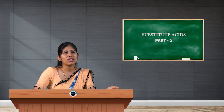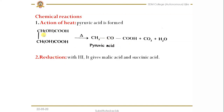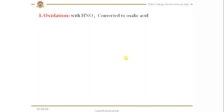Now we will see the chemical reactions of tartaric acid. First, action of heat — when tartaric acid is heated at higher temperature, we get pyruvic acid. Second, reduction — when tartaric acid is reduced with hydrogen iodide, removal of one hydroxy group takes place and we get malic acid. Further reduction removes the second hydroxy group and we get succinic acid. This is shown in two steps.